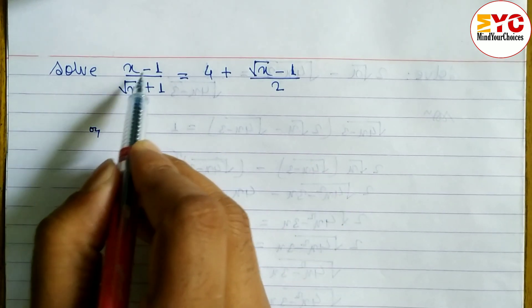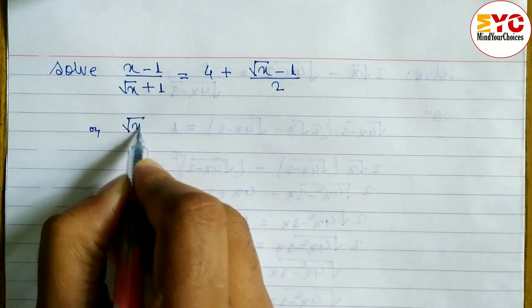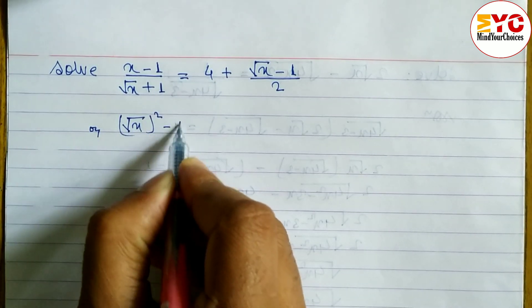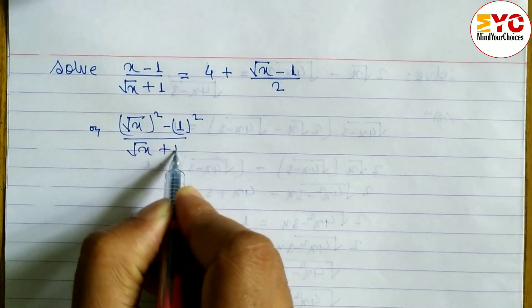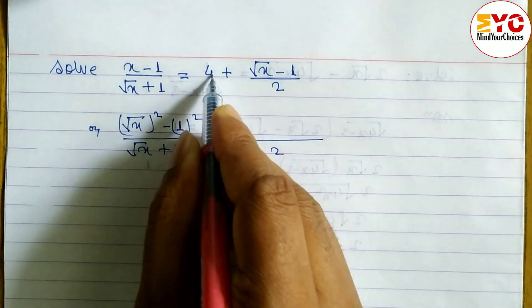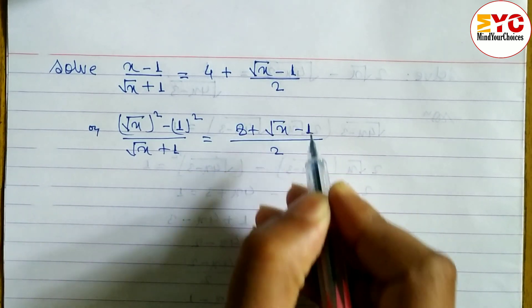First, we convert this to the form a² - b². We can write (√x)² - (1)² divided by √(x + 1) equals, taking LCM on the right side, 2 times 4 which is 8 plus √(x - 1).